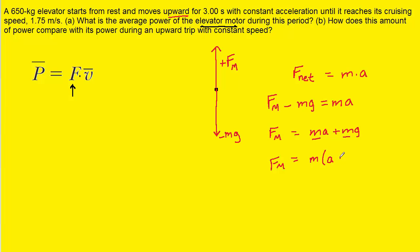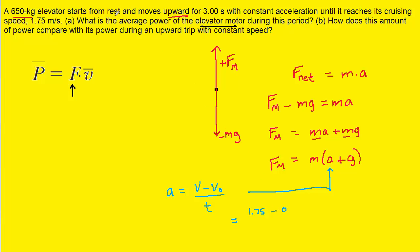Factoring out mass gives us fm equals m times (a + g), where g is 9.8 and the mass of the elevator is 650 kilograms. We don't yet have the acceleration, so we need to find it. Acceleration equals the change in velocity divided by time — final velocity minus initial velocity over time. The final velocity is 1.75 m/s, the initial velocity is 0 m/s (starting from rest), and the time interval is 3 seconds, giving us approximately 0.583 meters per second squared.